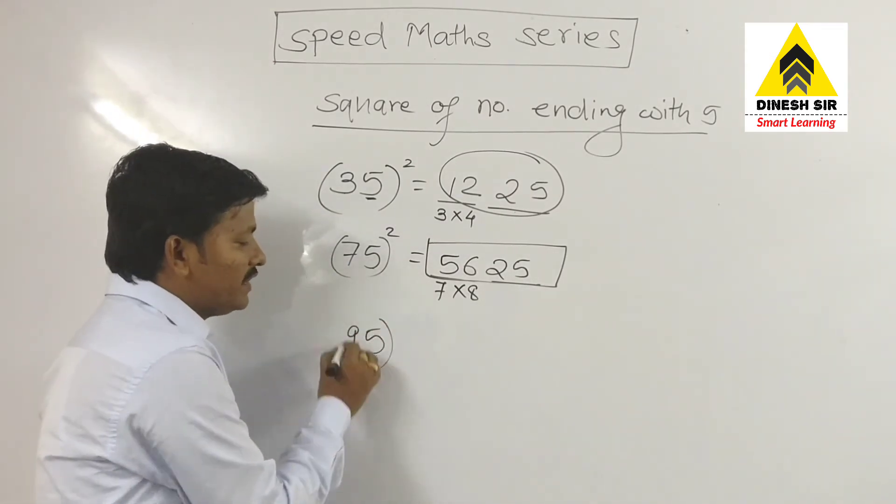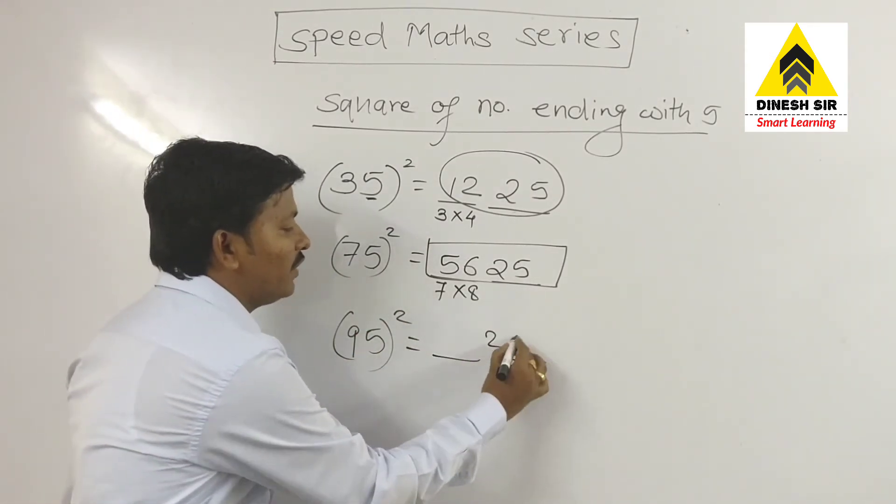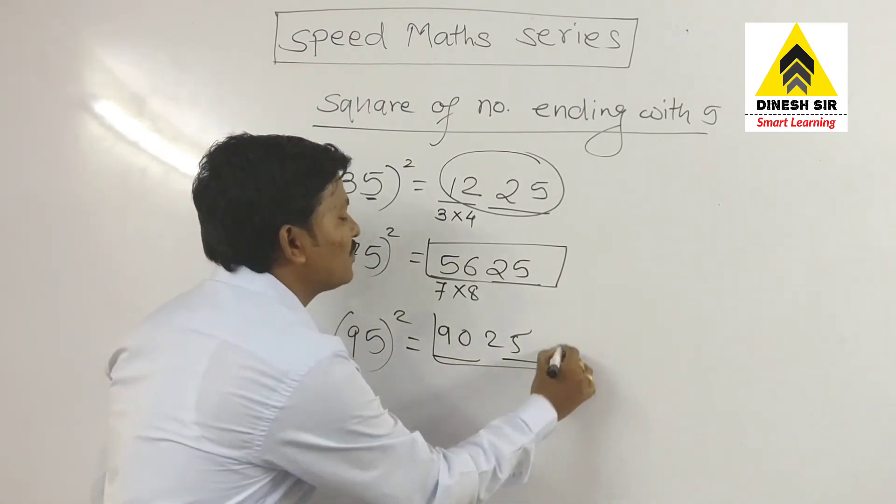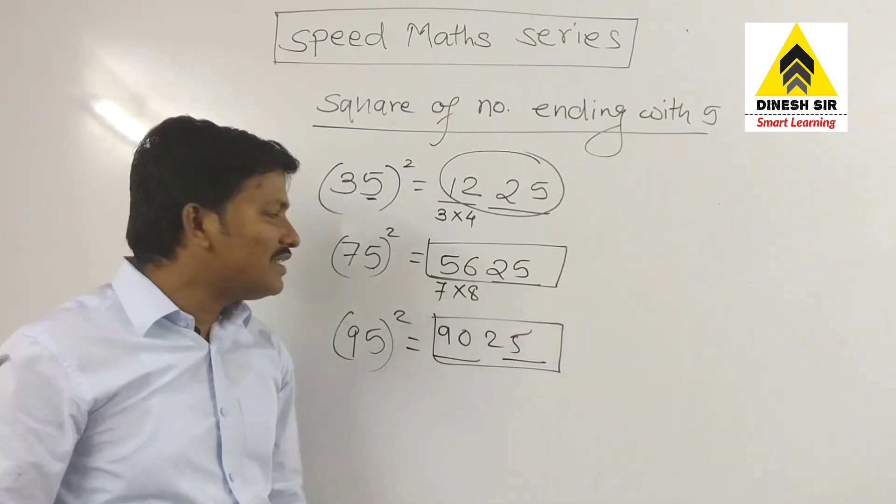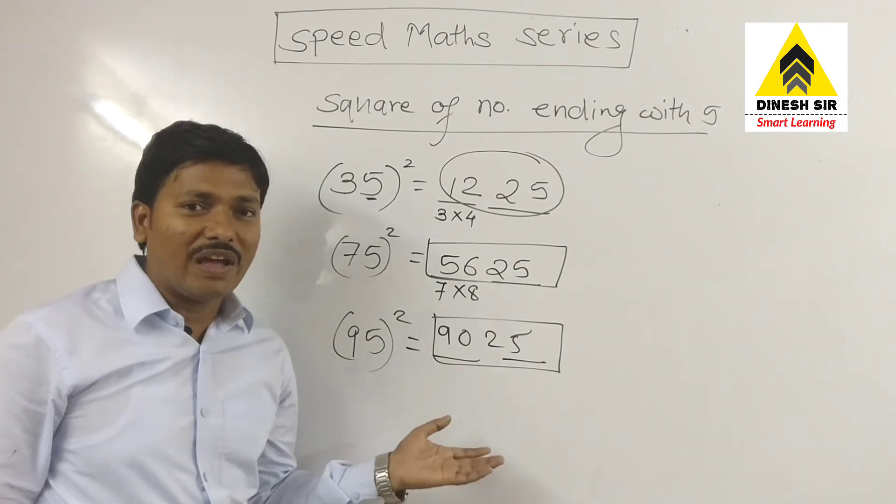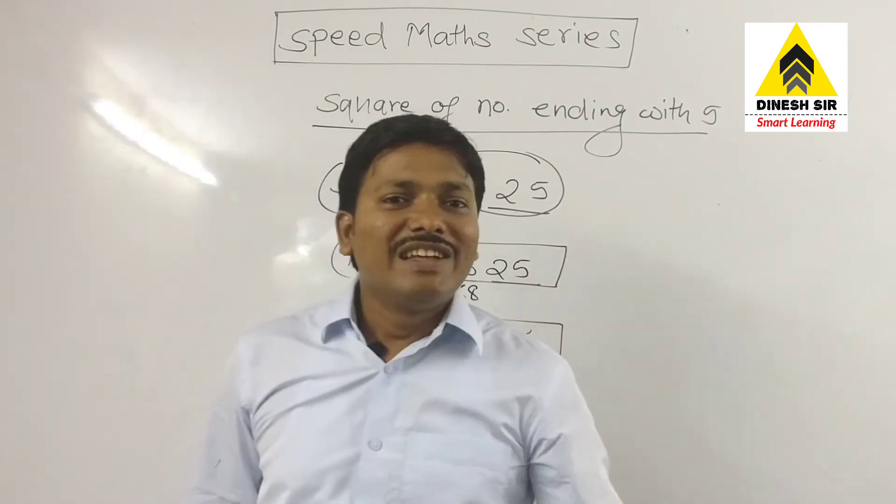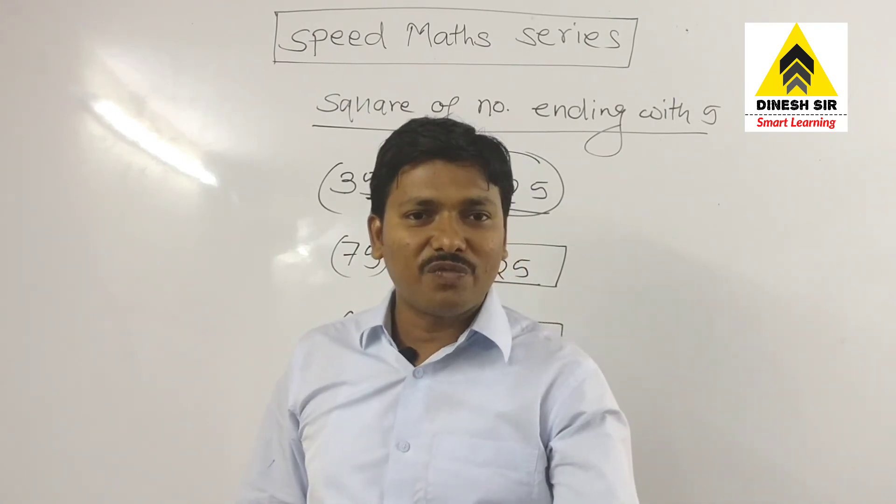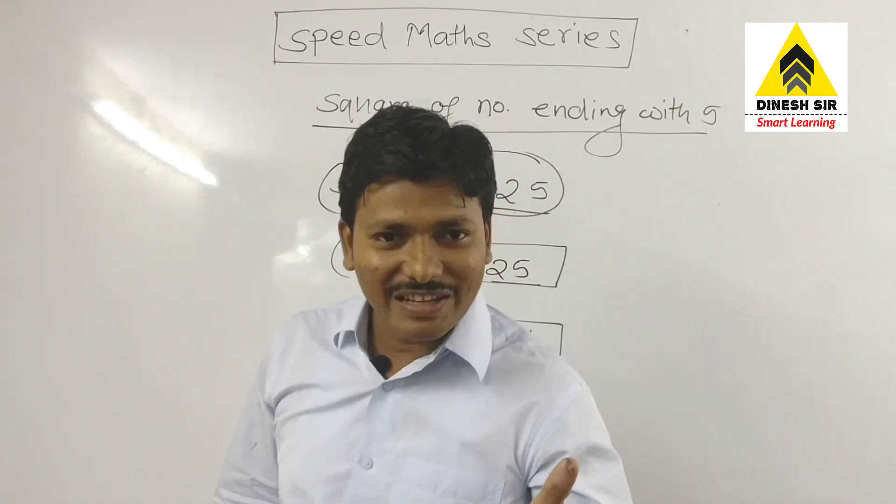If I take 95 square, then 25, 9 next number 10, 90. So friends, we have seen how easy to take square of a number which ends with 5. Now you can solve any square of any number ending with 5 with this method in few seconds only.